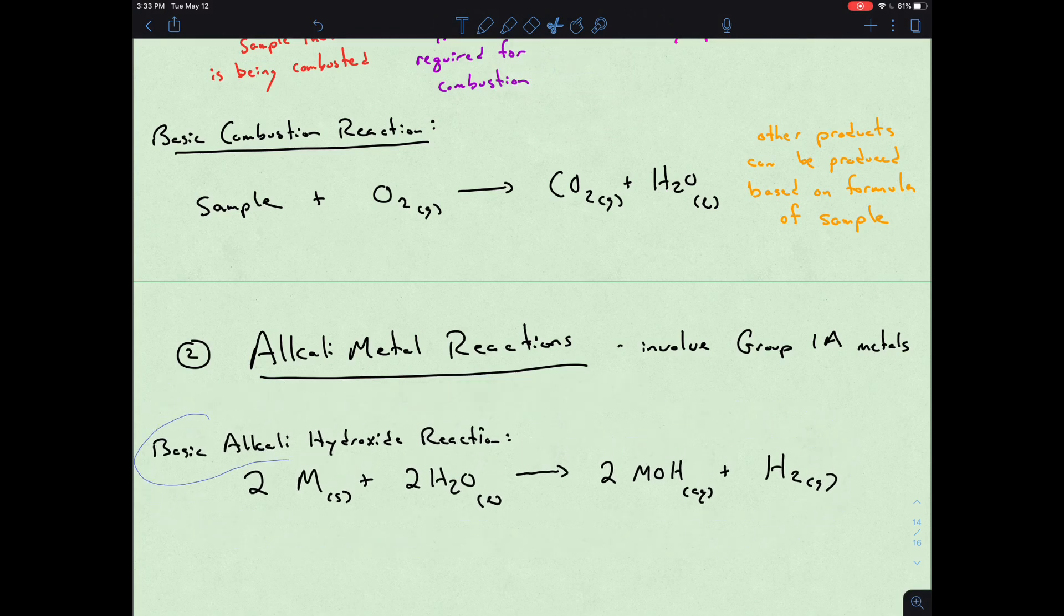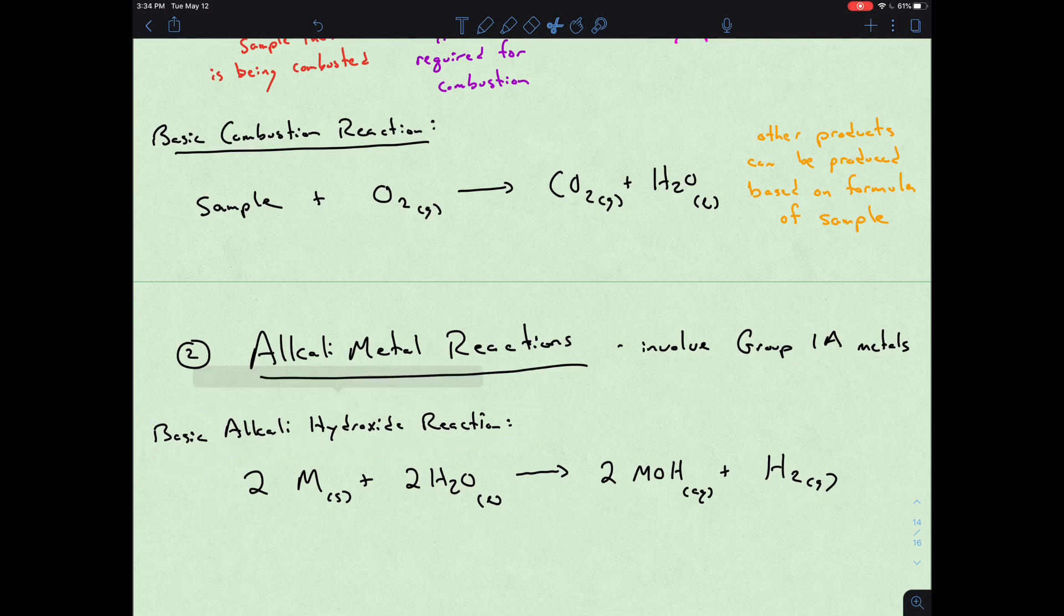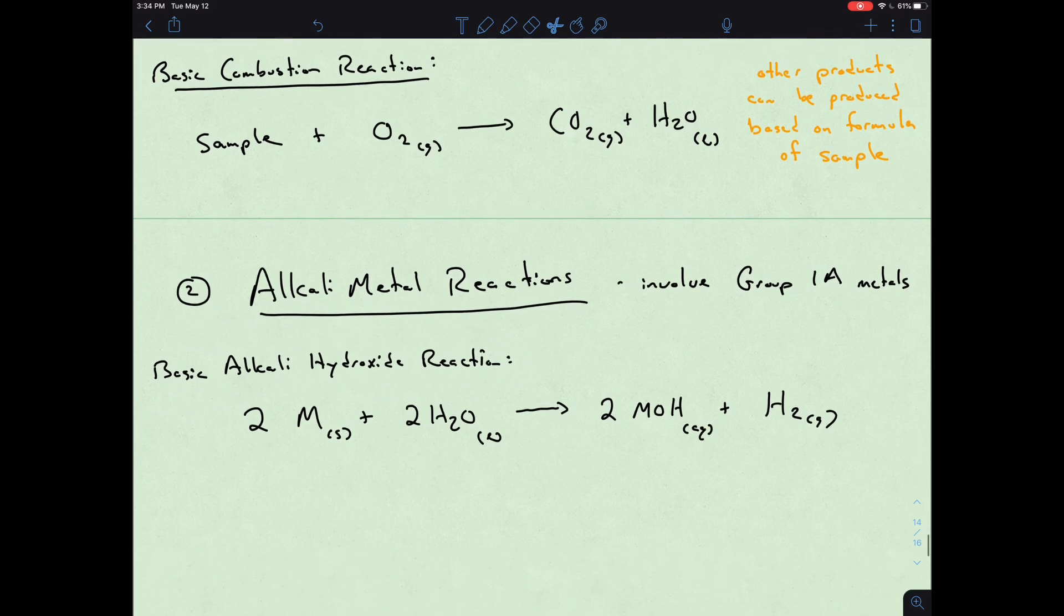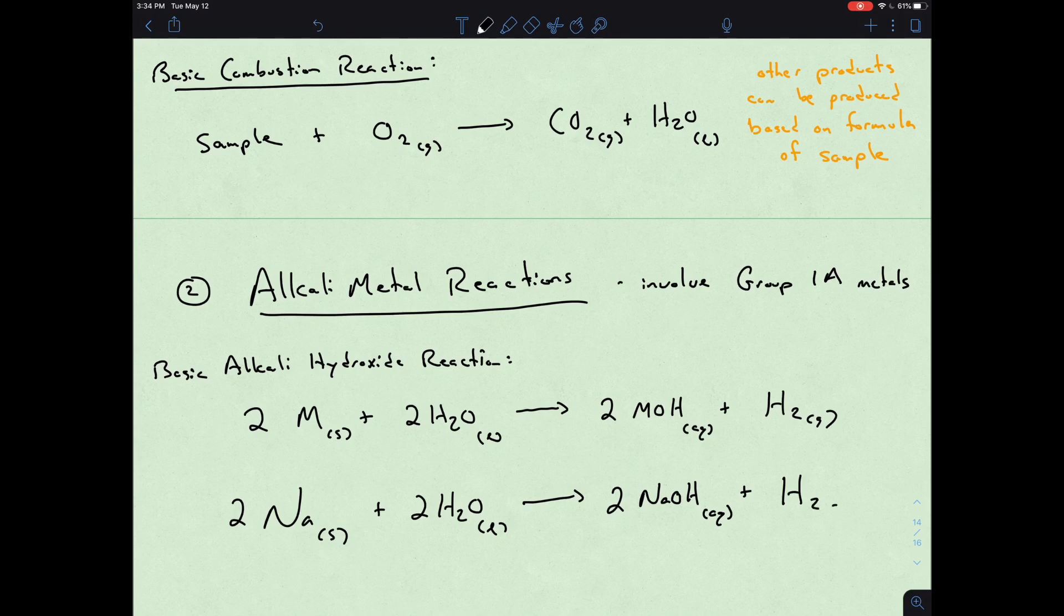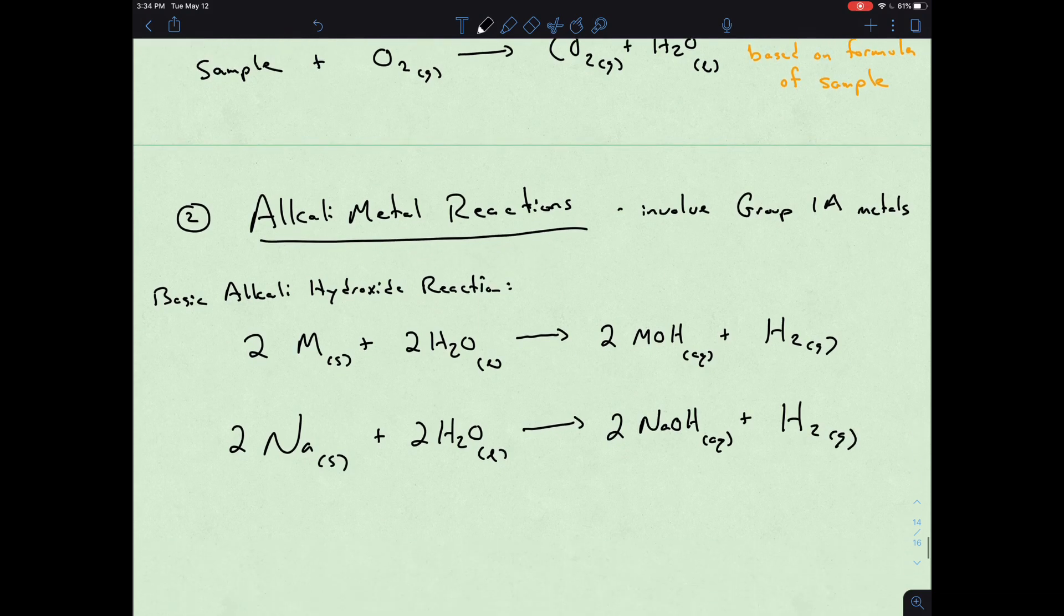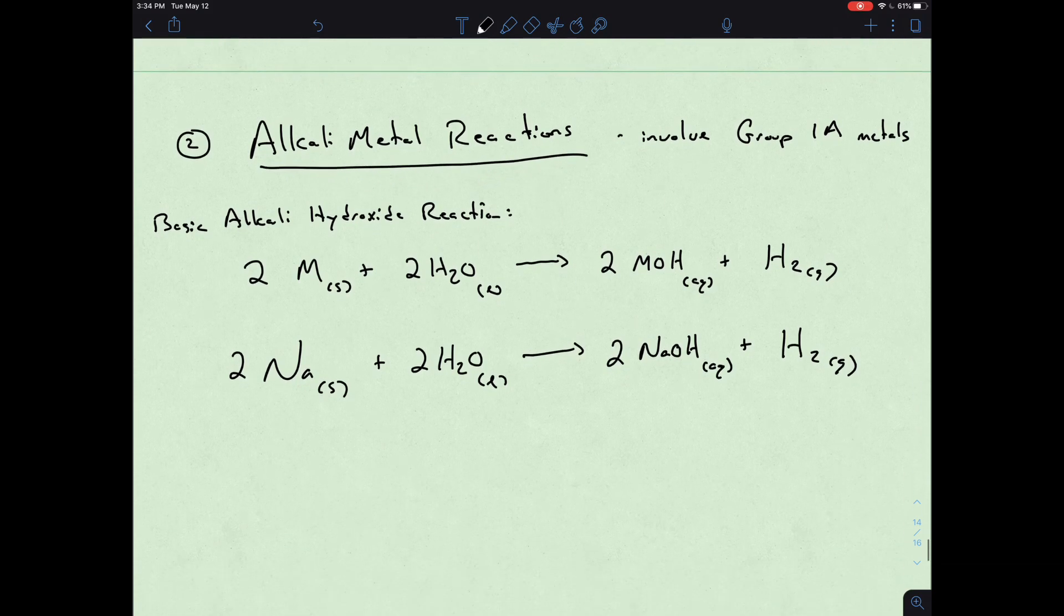We're converting that metal, we're putting it into water, and then we're turning it into a metal hydroxide. As an example, one that we've seen in the past would be taking two sodiums and reacting it with water to produce two sodium hydroxides that are in the aqueous phase plus hydrogen gas.